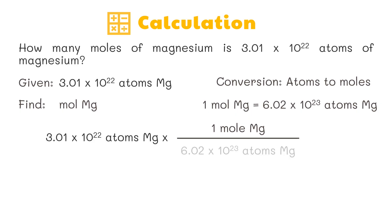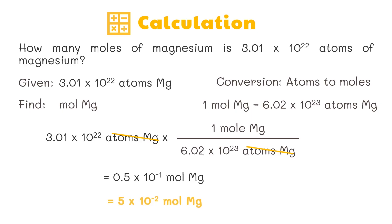The solution: 3.01 × 10²² atoms of magnesium multiplied by 1 mole of magnesium over 6.02 × 10²³ atoms of magnesium. We can cancel common units. This equals 0.5 × 10⁻¹ moles of magnesium, or 5 × 10⁻² moles of magnesium.